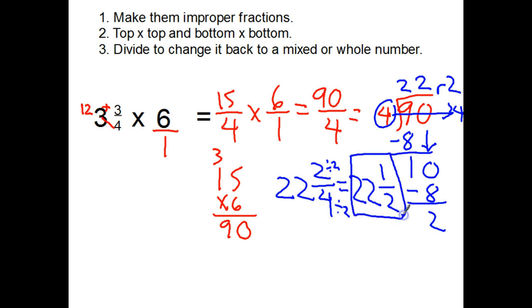That can be simplified — this is the first one that's been that way. The twenty-two stays as twenty-two, but I can divide the two and the four both by two to get twenty-two and a half. Check: six times three is eighteen, and three and three-fourths is closer to four, so six times four would be twenty-four, and I'm a little less than twenty-four.